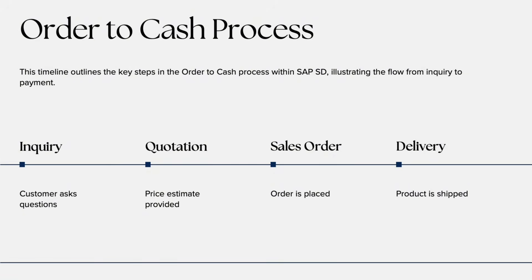One of the most important things to understand in SAP SD is the order-to-cash process, also known as O2C. This is the complete cycle that starts when a customer places an order and ends when the company receives payment. Let's break it down step by step. Step one is Pre-sales Activities — this includes inquiries and quotations, helping the company understand customer needs before confirming an order.